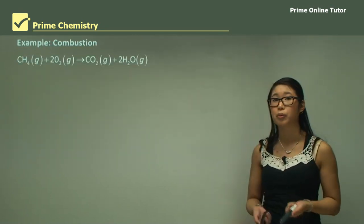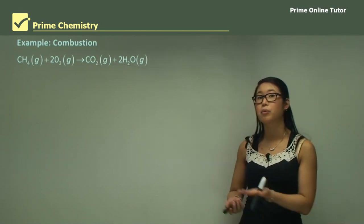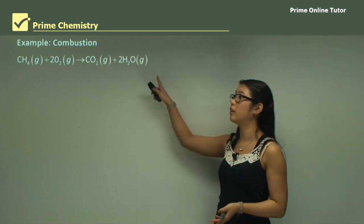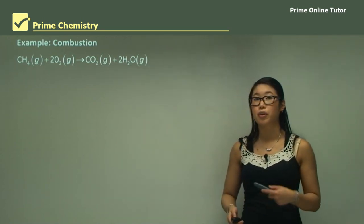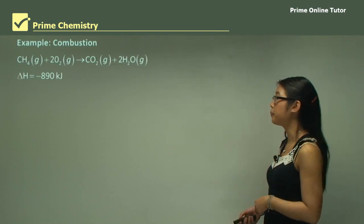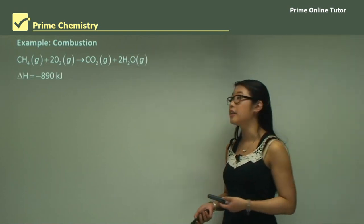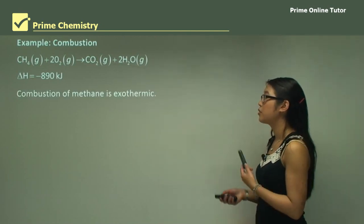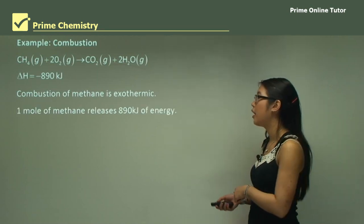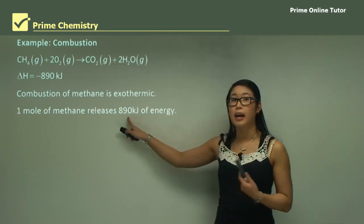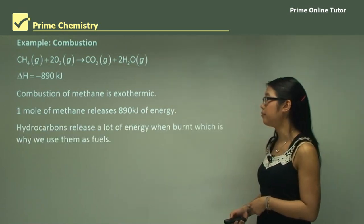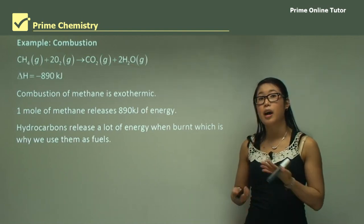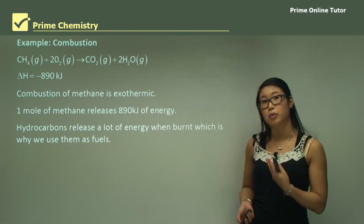For example, combustion — we know combustion is like burning something, so it's always an exothermic reaction. The combustion of methane CH₄ with oxygen produces carbon dioxide and water, and because it's combustion the delta H value is negative — specifically -890 kilojoules. Hydrocarbons release a lot of energy when burnt, which is why we use them as fuels, and this energy is in the form of heat as well as a bit of light.